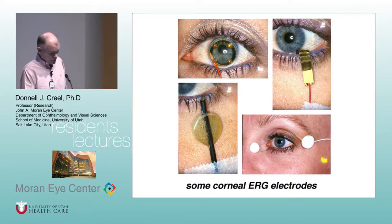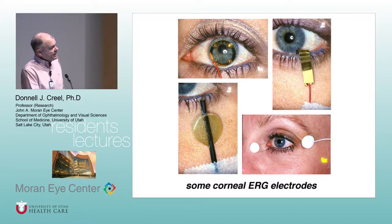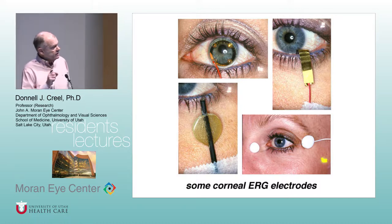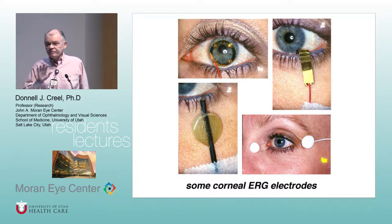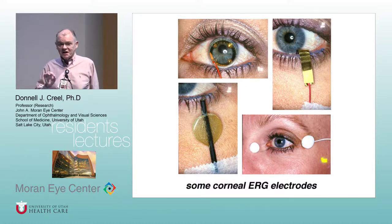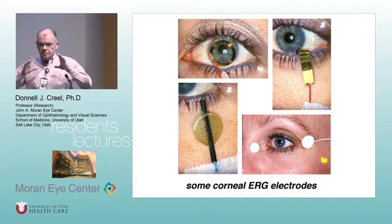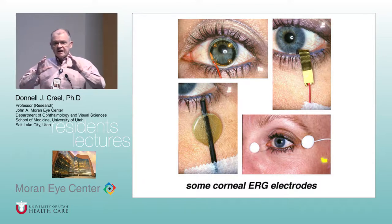So they have to use disposables. The disposable that I use commonly is called a DTL. If you look finely, there's a silver thread between these two white dots that goes in the lower lid. It's a very thin thread — actually five strands — as thin as a hair. A roll about this big is 10 miles.